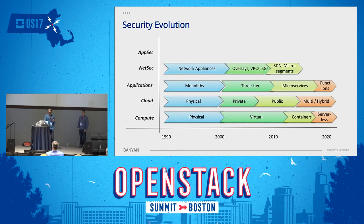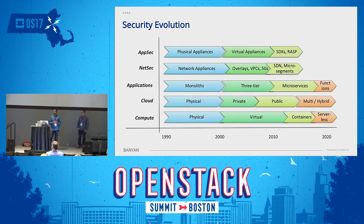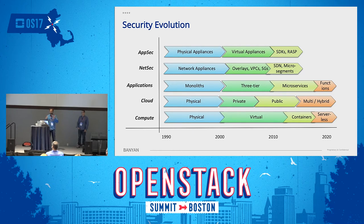Security has evolved in two dimensions in silos — NetSec and AppSec — evolving at their own pace. Network appliances, overlays, VPCs, security groups, SDN micro-segmentation are popular in different environments. On the AppSec side, there are physical appliances, virtual appliances, and more recently SDKs and RASP. But all of these are fundamentally built pre-microservices and pre-this dynamic sprawling infrastructure era. The question is: what is the next thing that could address these new attack vectors opened up by microservice architectures?